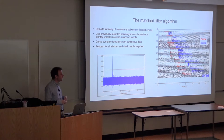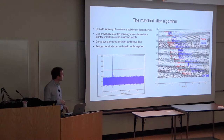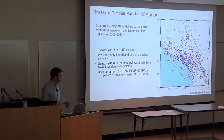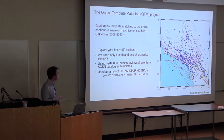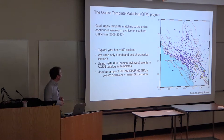This template matching algorithm is extremely powerful - typically finding five to ten times as many events as conventional techniques. The downside is it's very computationally demanding, requiring lots of floating-point arithmetic. Most studies have been limited to a few weeks of data with tens of seismic stations. This led to a project I started as a postdoc called the TTEQ template matching project - applying this algorithm to our entire continuous waveform archive for 2008 to 2017, which would require three to four orders of magnitude more computation than anything previously done.